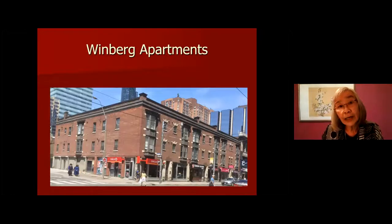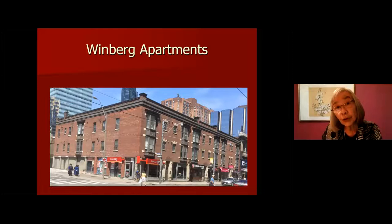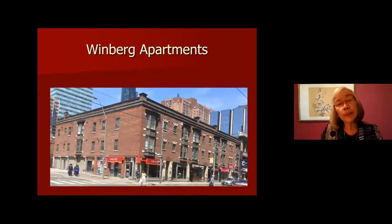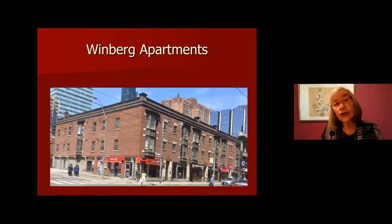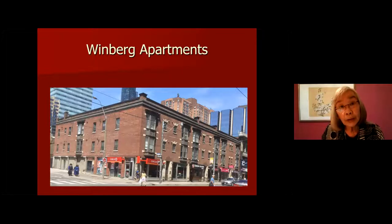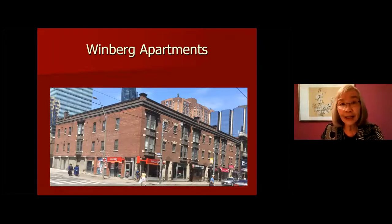Walking west along Dundas Street, we get to the corner of Elizabeth and Dundas. On the northeast corner is this three-story building known as the Weinberg Apartments. What happened was as homes and buildings were being torn down in the Ward and replaced, the idea behind this three-story was that the second and third floors would be affordable housing — apartments — with rents subsidized by the businesses on the street level. It was a very innovative idea at the time.